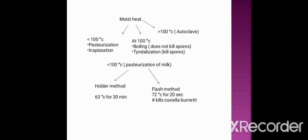Tindalization, done at 100 degrees centigrade for 20 minutes for three consecutive days, kills endospores. Above 100 degrees centigrade is the autoclave — the surest method to kill endospores. Autoclave is done at 121 degrees centigrade for 15 to 20 minutes at 15 pounds per square inch pressure.